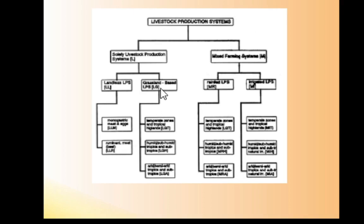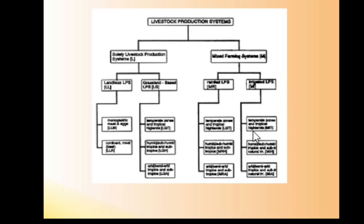Under landless livestock we have monogastrics and ruminants. Under grassland-based, we have temperate zones and tropical highlands, humid and subhumid tropics and subtropics, and arid and semi-arid tropics and subtropics. Under mixed farming systems, there are two classes: rain-fed and irrigated. Rain-fed covers temperate zones and tropical highlands, humid and subhumid tropics and subtropics, and arid and semi-arid tropics. Irrigated covers the same climate zones.